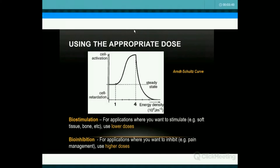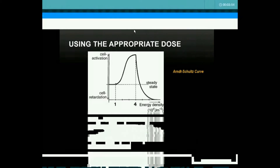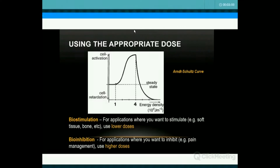This is the most important slide to understand — it's called the Arndt-Schulz rule. If you start off at a very low dose, there's no effect at all. As you start to increase the dose, one to four joules, you get biostimulation. As it goes even higher, you get bioinhibition. Stimulation is for things like healing — you want to stimulate fibroblasts for soft tissue healing, or if you've done implants, you want more bone to grow in. Bioinhibition is for pain control and reduction of inflammation. Understanding this determines what doses should be used.